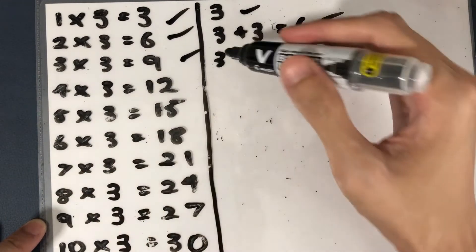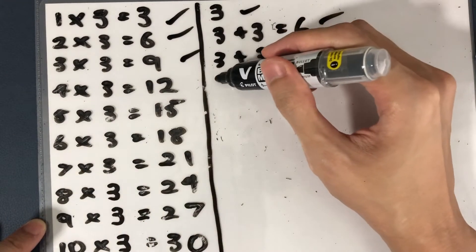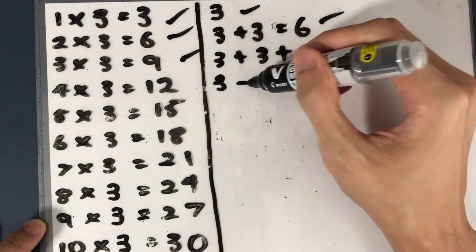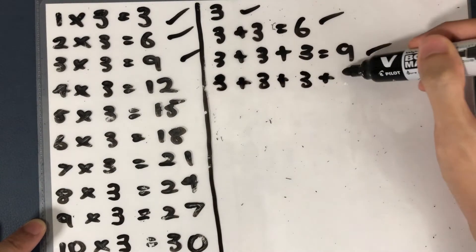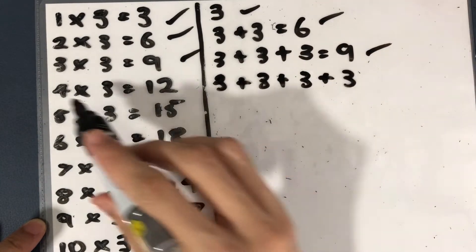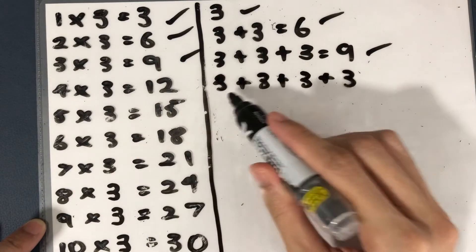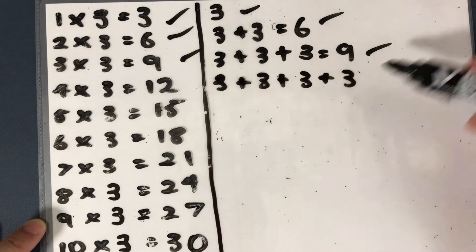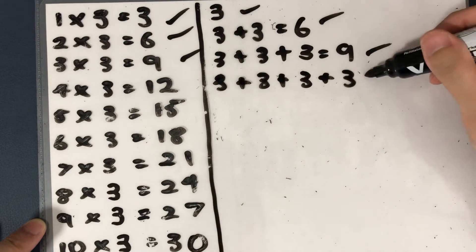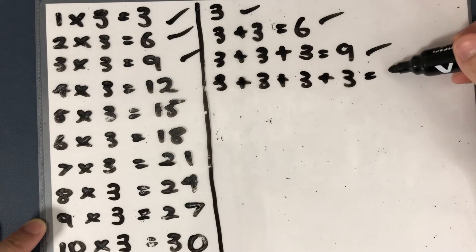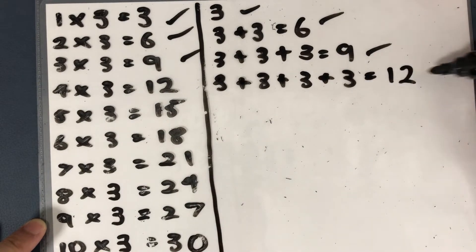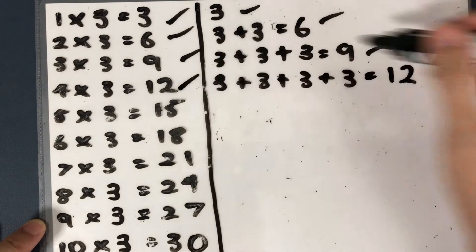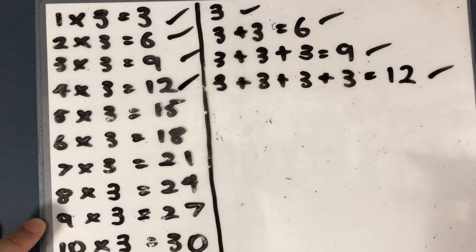4 threes — let's do one last one: 3, 3, 3, and 3, four times — 1, 2, 3, 4. So 4 threes altogether, and what do you get? 12. And the answer is the same.